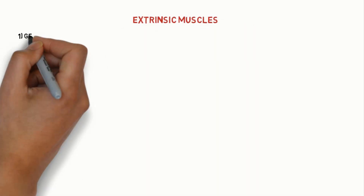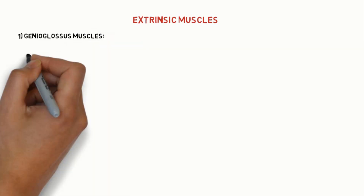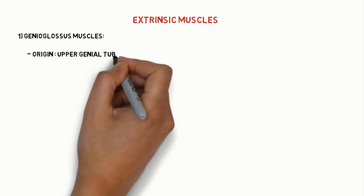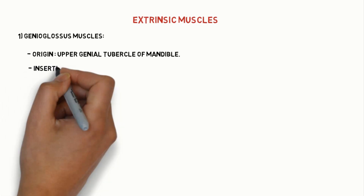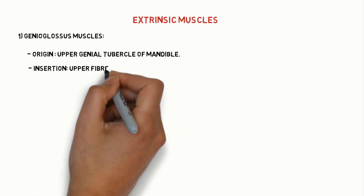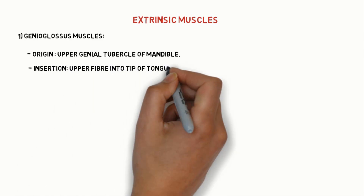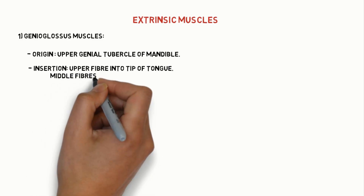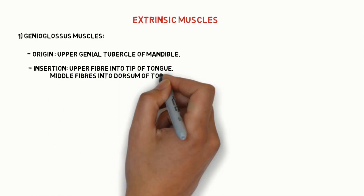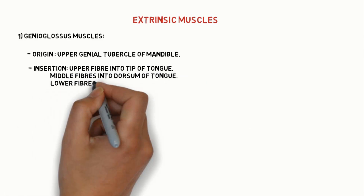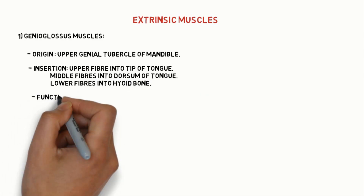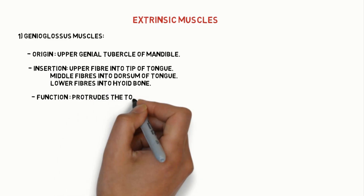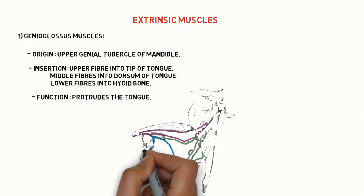Coming to the extrinsic muscles of the tongue, the first one is the genioglossus muscle. It originates from the upper genial tubercle of the mandible. Coming to insertion, there are three fibers: the upper fiber into the tip of the tongue, the middle fiber into the dorsum of the tongue, and the lower fiber into the hyoid bone. Function: the genioglossus muscle protrudes the tongue.